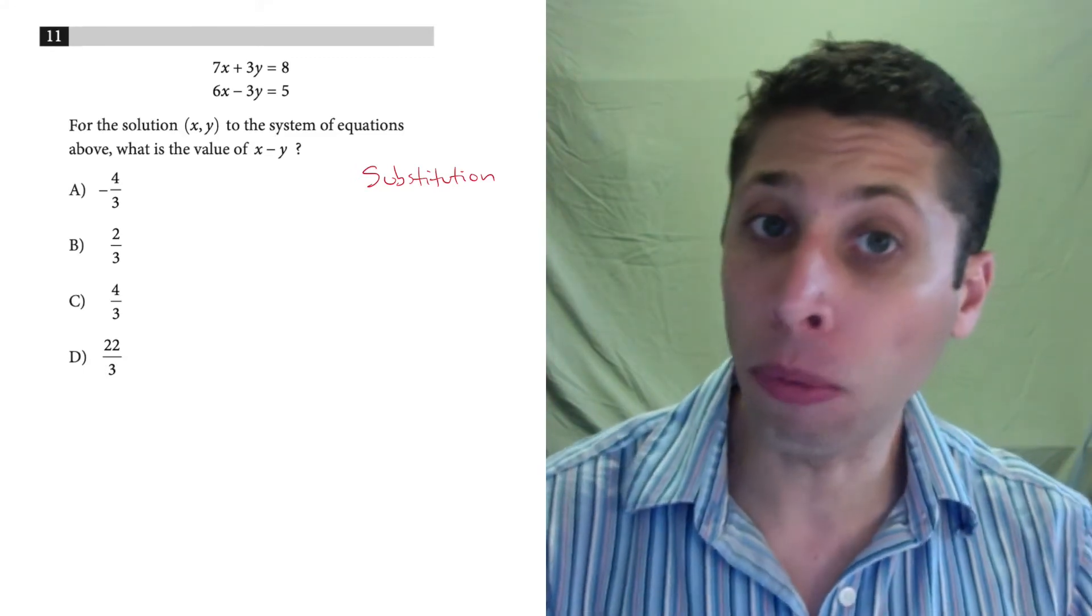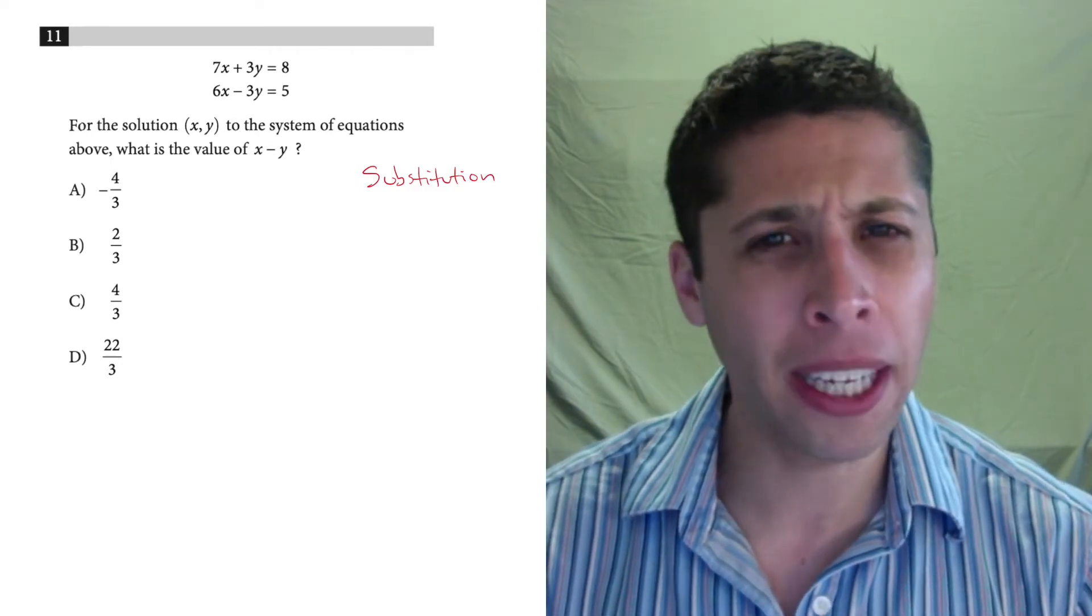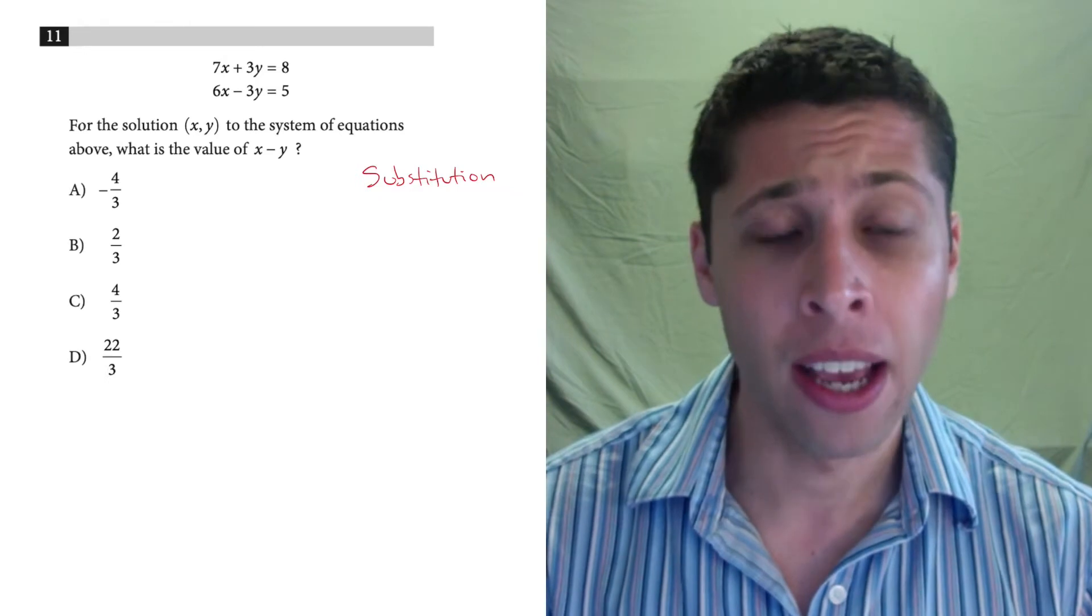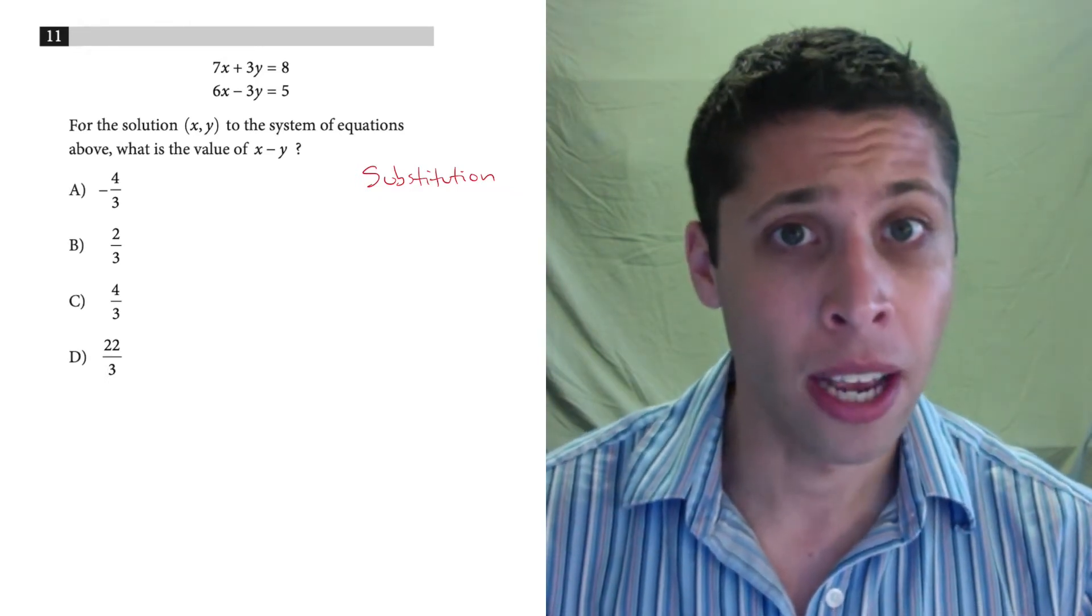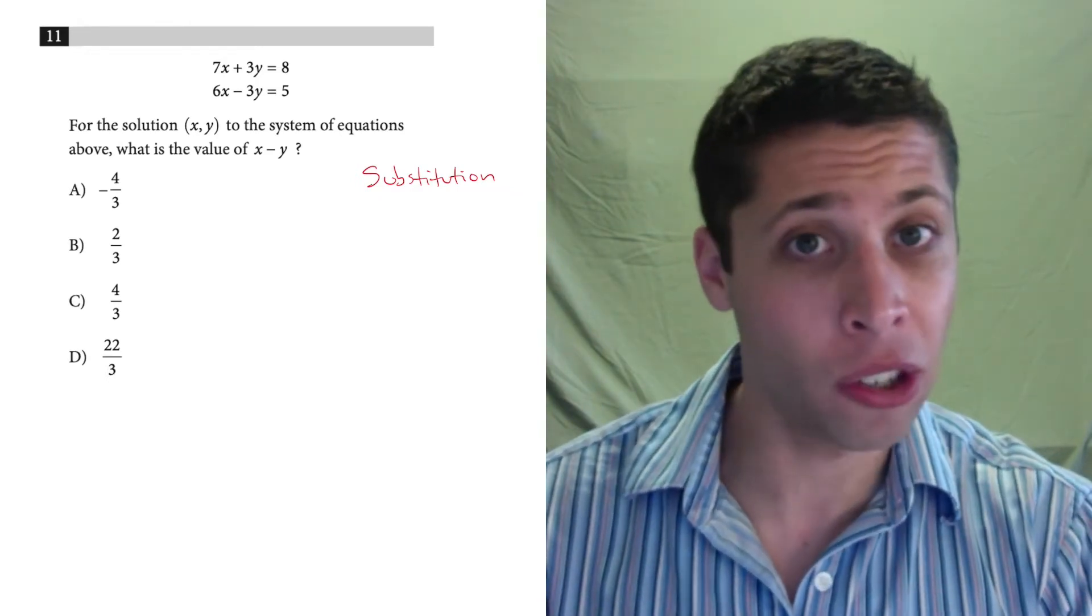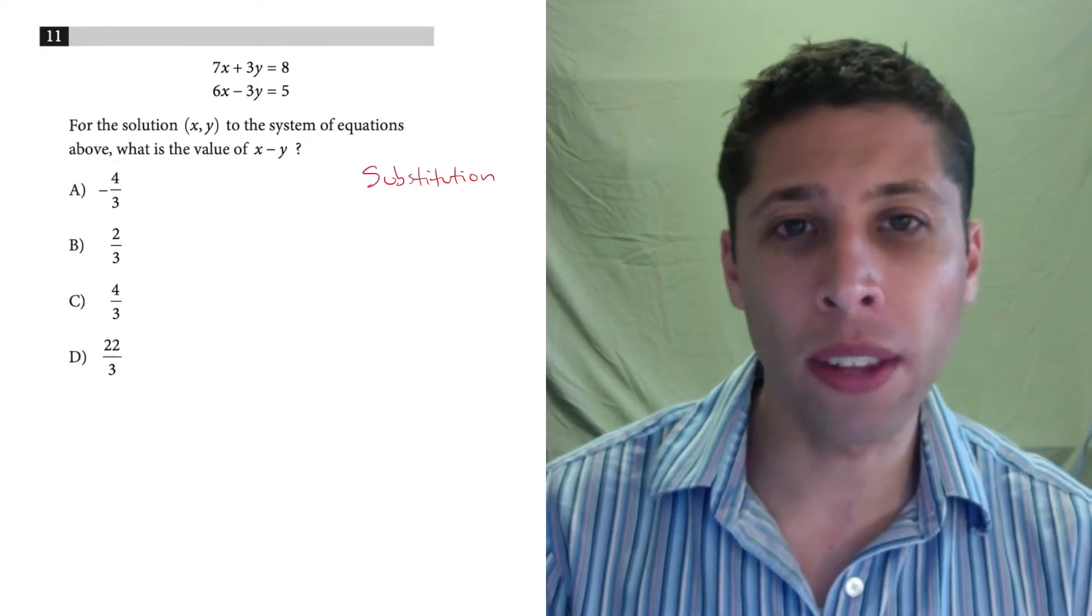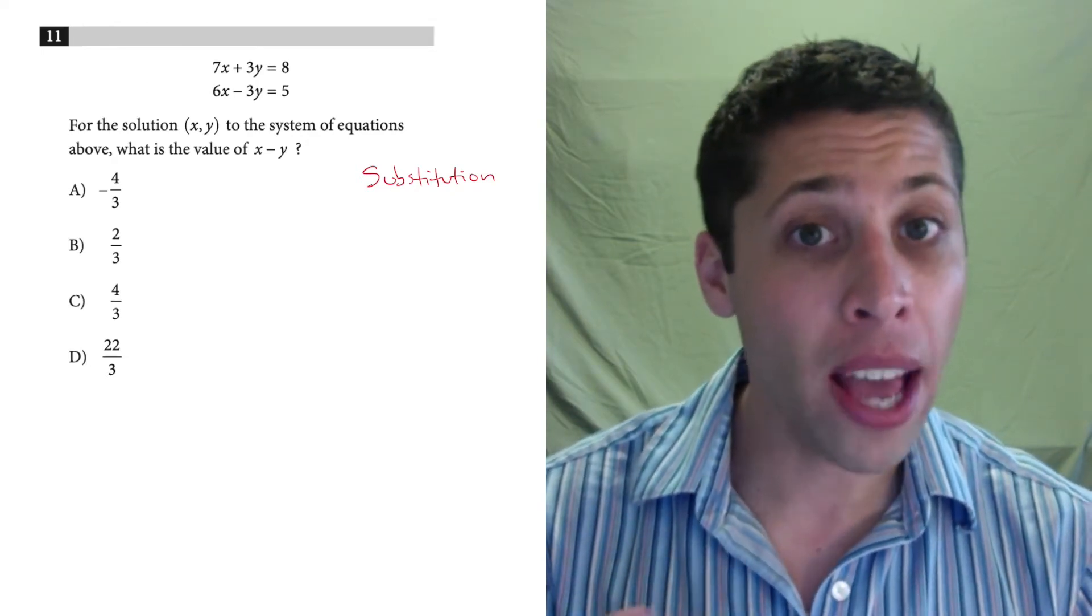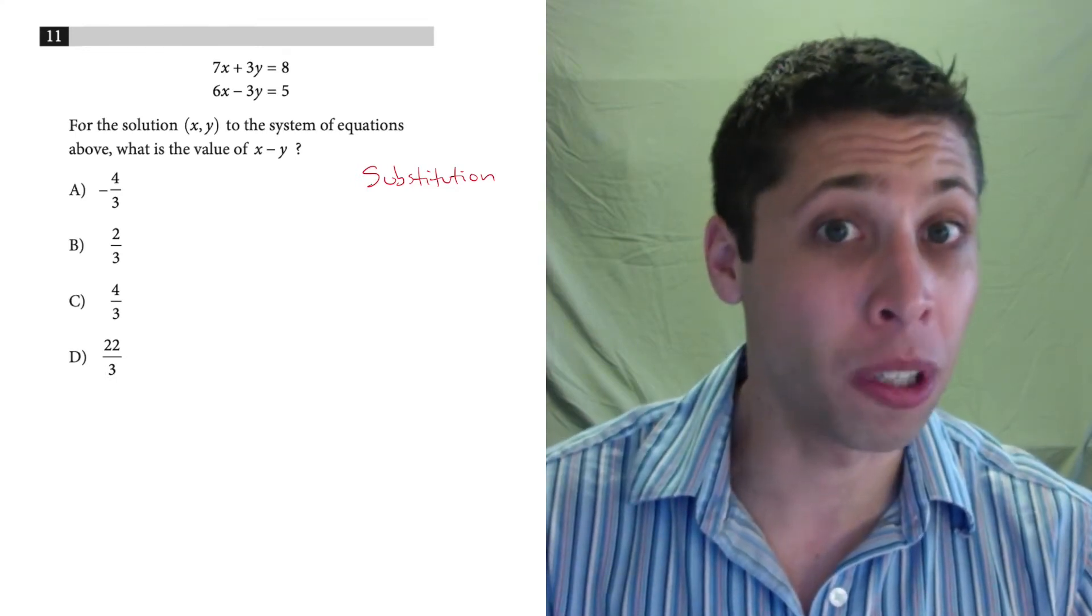A lot of people really like substitution. It's very straightforward to them, I guess. And so that seems to be their default way of solving a system of equations. Sometimes it is the most efficient thing, especially if we have one of the equations as like a quadratic or something that's not a line. Then we're better off doing substitution.